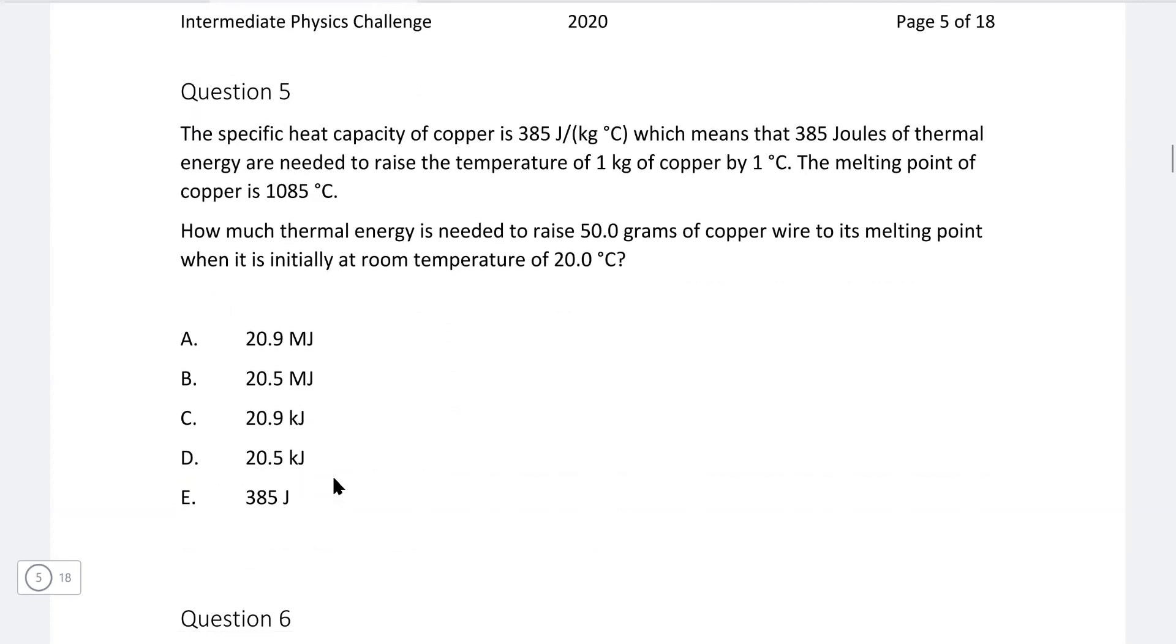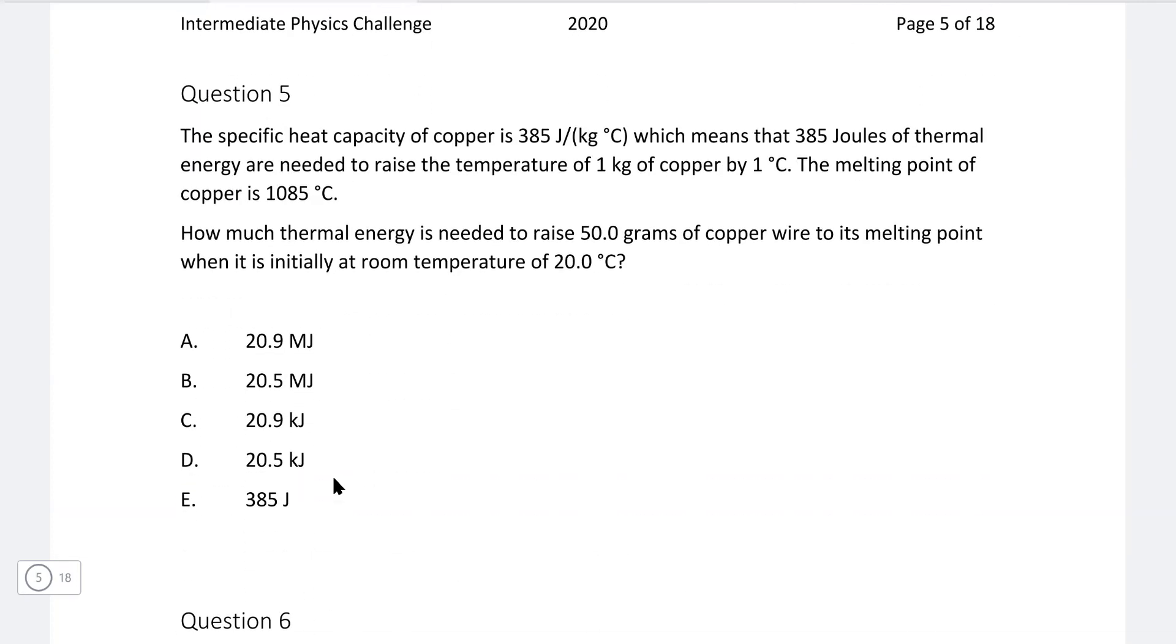Okay, next question 5. The specific heat capacity of copper is 385 joules per kilogram per degree Celsius, which means that 385 joules of thermal energy needed to raise the temperature of 1 kilogram of copper by 1 degree Celsius. Then we're given the melting point. How much thermal energy is needed to raise 50 grams of copper wire to its melting point when it's initially at room temperature of 20 degrees C?